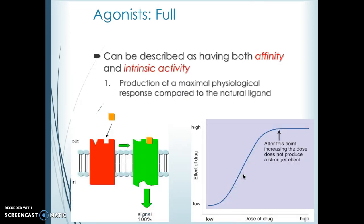A full agonist is a subtype of agonist that has both affinity and intrinsic activity. When it binds, it attaches to the receptor and produces a maximum physiological response, essentially identical to the natural ligand. So it has high affinity and high activity. As you give the drug, you will see activity increase to a certain point, which is the ceiling effect of that activity — that is a full agonist.